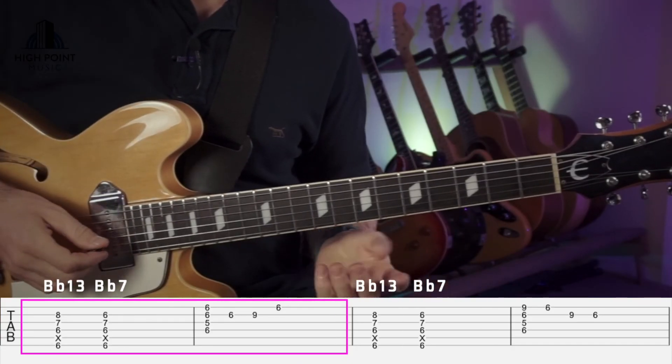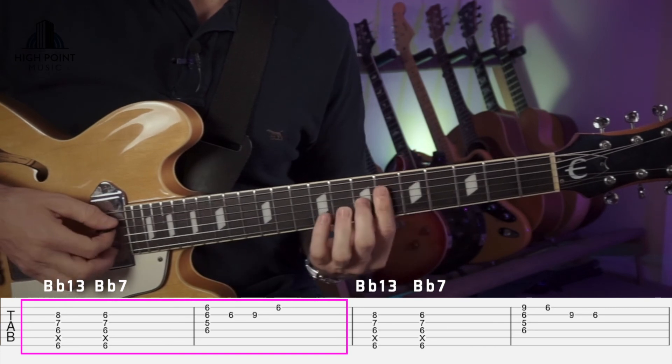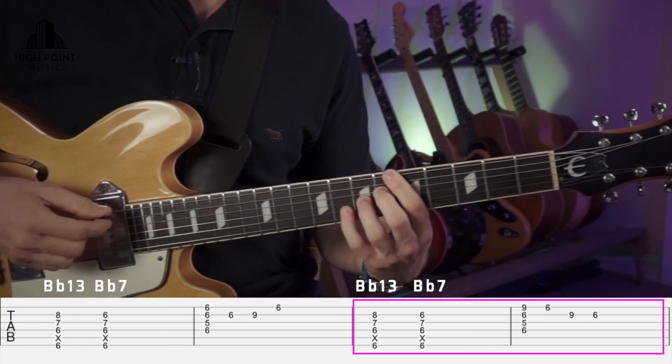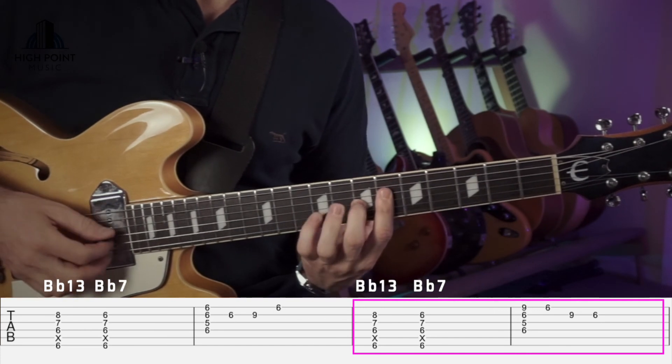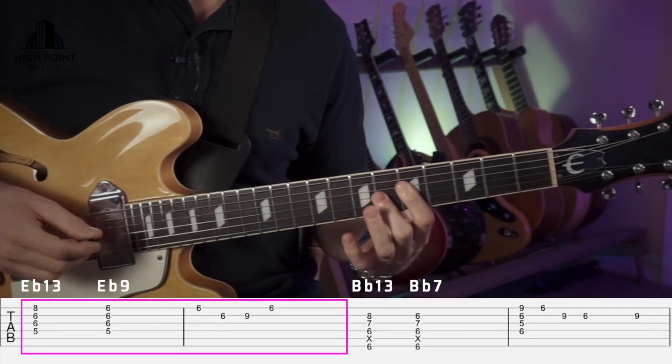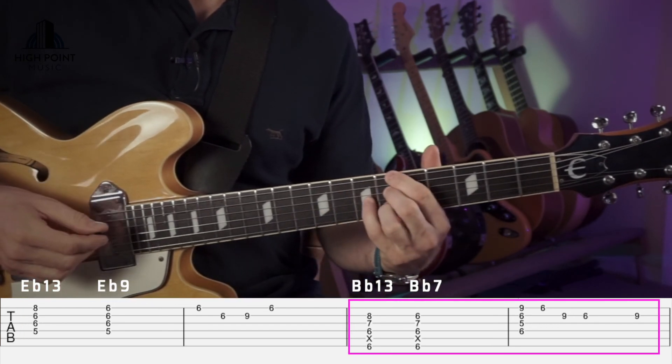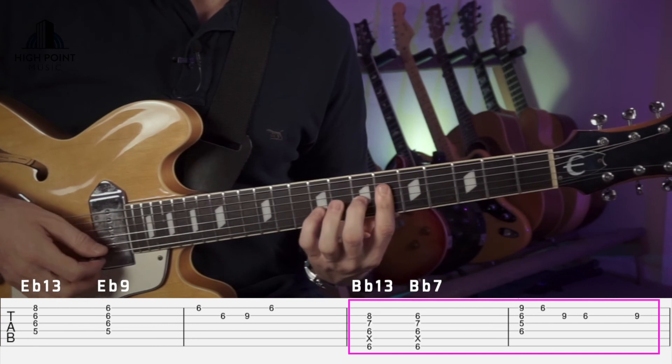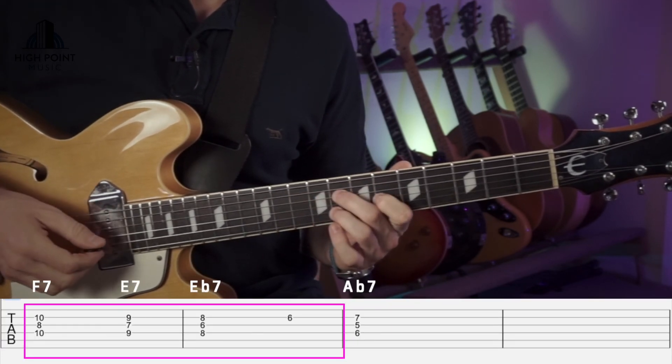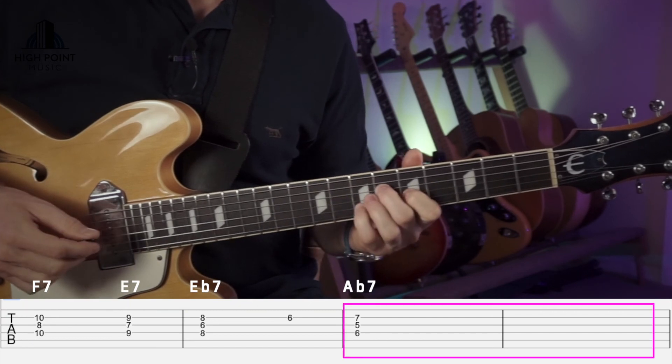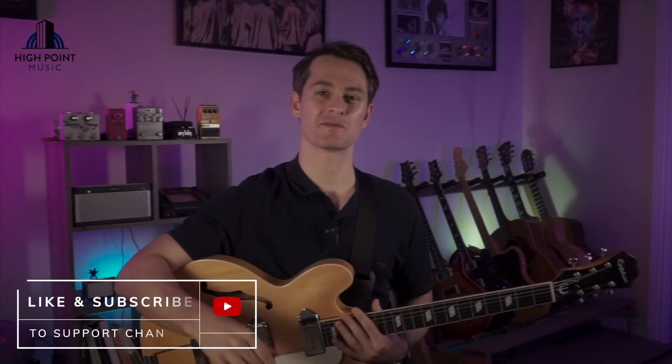So one more time, people, just to recap what we've covered so far. So Bb13 to Bb, and then here, the call and response, the variation, Bb13 here, we have a run, Bb13, F7, Bb7, Ab7, to finish off here. So that wraps up our lesson for Freddie Freeloader today.